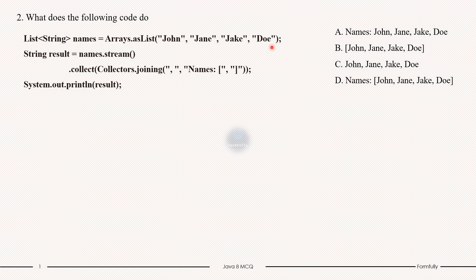First step is creating the list. We initialize a list of strings with the names John, Jane, Jake, and Doe. This list is the input data we will process. Then creating a stream, we convert the list into a stream using the stream method.